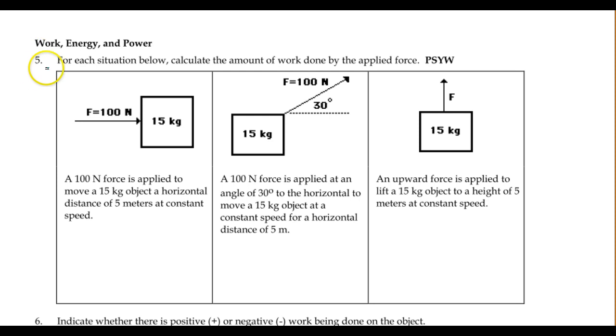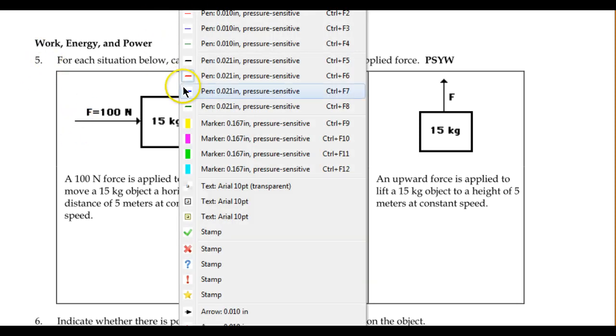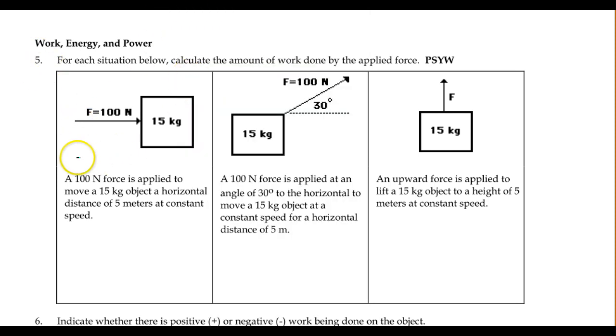So one of the key things you want to do whenever you're working with a situation is make it clear to yourself which way and how far the displacement of the object is. In this case it's moving 5 meters and it's going to move horizontally at constant speed. So we assume it's on a flat surface, so it's going to move directly to the right, 5 meters.